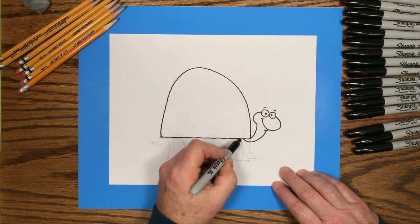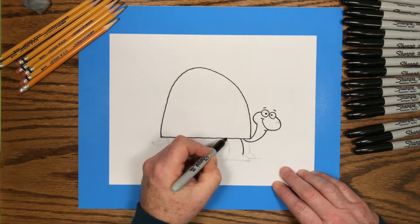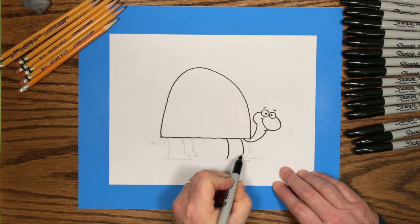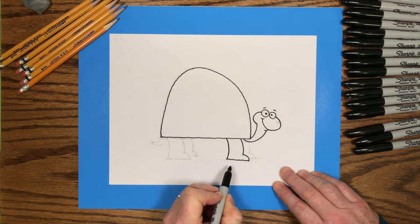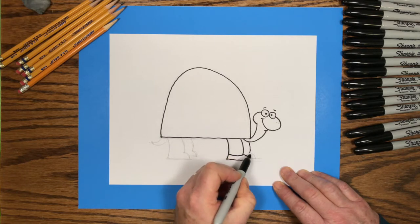And then we go to the front leg. I'll draw the curved lines down to the foot. And then a line right across the top of the foot, which will be the top of his shoe.